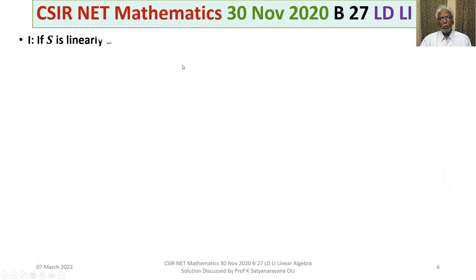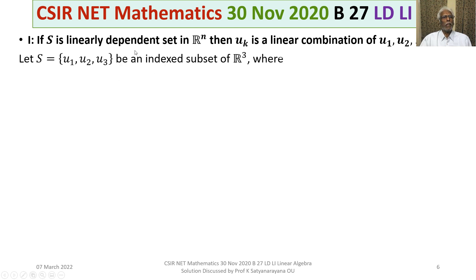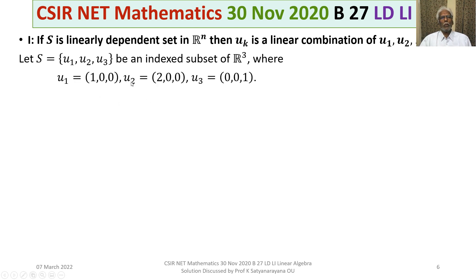Let us now discuss the solution of the problem in detail. For Statement 1: it states if S is a linearly dependent set in Rn, then Uk is a linear combination of its predecessors U1, U2, ..., Uk-1. This statement is not true. To substantiate this, we give a counter-example. Let S equal to {U1, U2, U3} be an indexed subset of R³ where U1 is (1,0,0), U2 is (2,0,0), and U3 is (0,0,1). Obviously U2 is 2 times U1, and thereby S is linearly dependent.